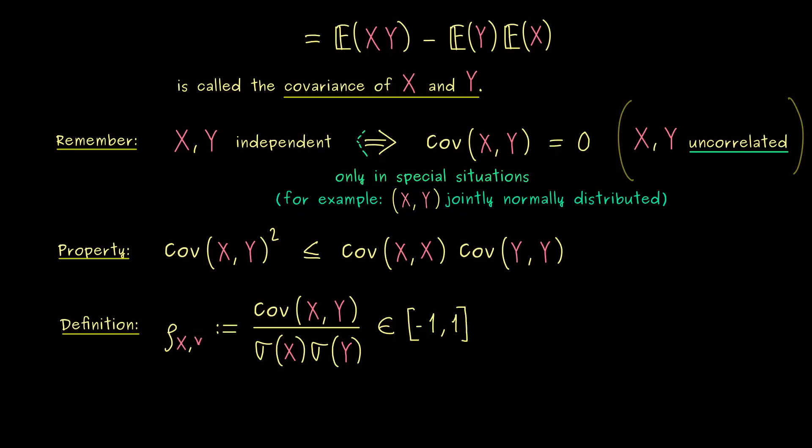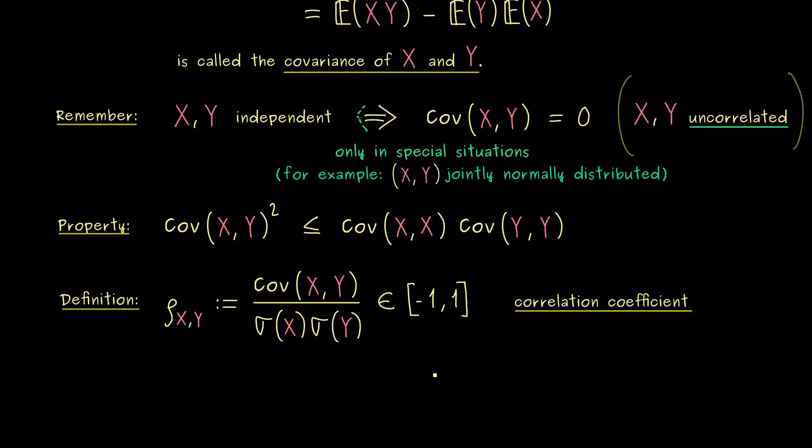And the usual symbol one uses for this number is a lowercase rho. And in the index we put the two random variables X and Y. Now, there are different names for this coefficient around, but I will simply call it correlation coefficient. Ok, and there you see, with that we now have a measurement that tells us how correlated two random variables are. Here, being close to 0 means the two random variables are close to independence. On the other hand, being close to minus or plus 1 means they are very far off of being independent, so they are very correlated.